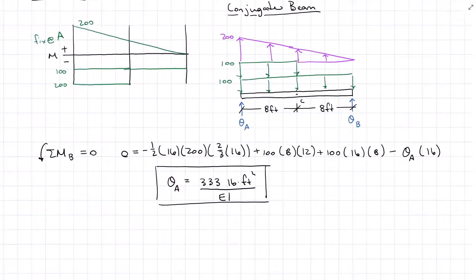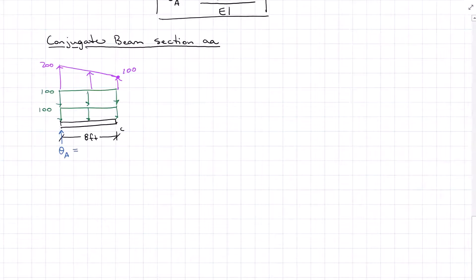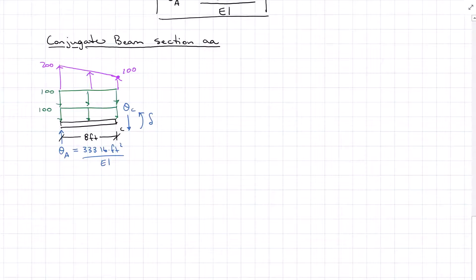Now for point C, we need to find the deflection at C. I'm going to take a section on my conjugate beam at C. I've already solved for theta A, so I'll take the left side. When we section a beam, we have internal shear and internal moment — no internal normal force on a conjugate beam. Moment on a conjugate beam represents deflection, so I'll take a moment about C.